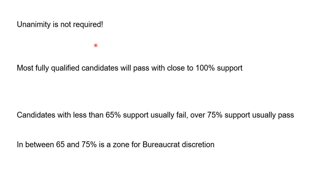The good thing about RfA is that unanimity is not required. Most fully qualified candidates pass with close to 100% support, but candidates with less than 65% support usually fail, while over 75% support usually means a pass. Between 65% and 75% is a zone for bureaucrat discussion, and normally there will be what we call a 'crat chat' if someone falls in the middle of that zone.